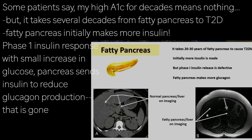I have several patients who tell me: 'Doc, I have had a marginally elevated hemoglobin A1c for about 10 to 15 years — it means nothing.' But what they need to realize is that it takes two to three decades of a fatty pancreas before you progress to type 2 diabetes. The fatty pancreas initially is actually making more insulin. But phase 1 insulin response — meaning when there is a slight shift in glucose, the pancreas squirts the right amount of insulin and reduces glucagon production — that is gone.